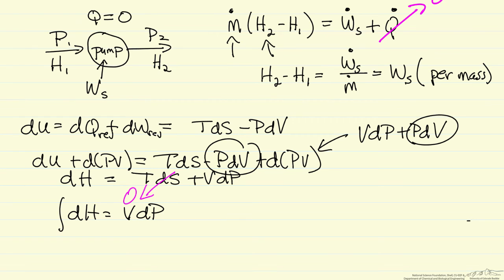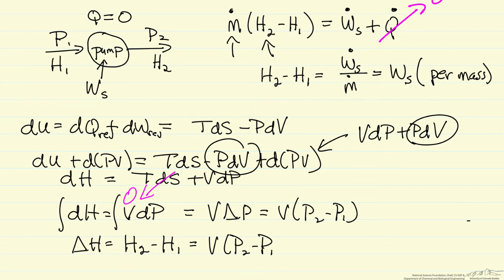We can integrate this to get delta H, where delta H in this system is H2 minus H1, integral of the right side. The volume is constant if we assume incompressible liquid, so we get V times delta P, which for this system is P2 minus P1. So this enthalpy change is the volume of the liquid per mass, that's important, times P2 minus P1.